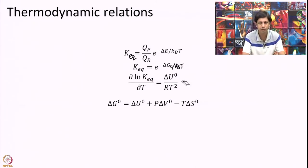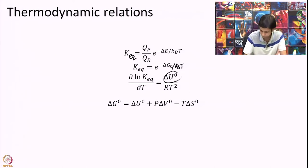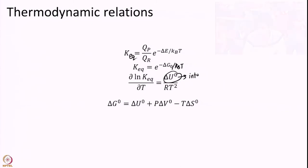So, if I just take derivative of ln K equilibrium with temperature I will get delta U naught over RT square where delta U naught is your internal energy. And finally, you perhaps already know the definition of delta G itself. It is delta U naught the internal energy plus pressure into delta V minus T into delta S. So, these relations I will be needing today.